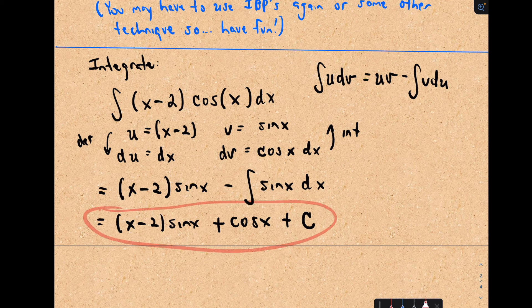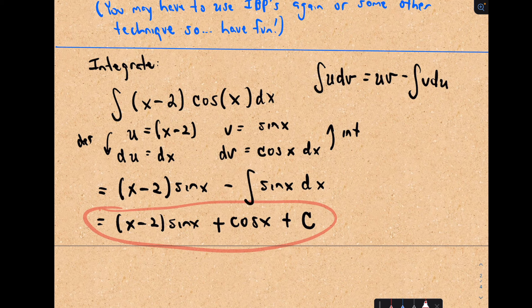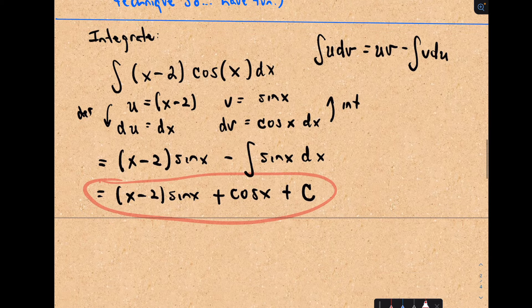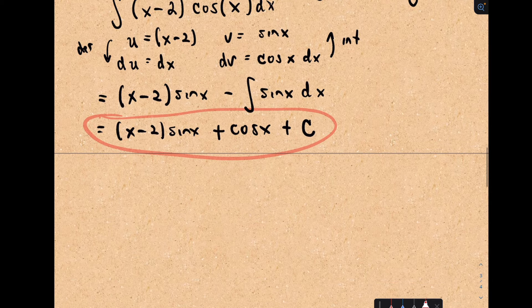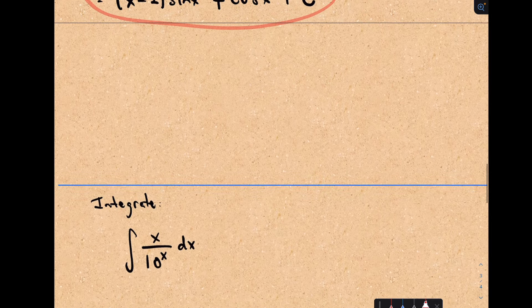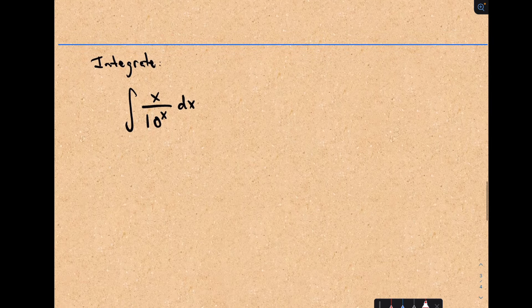It's much like u substitution as well, because sometimes you have to do a u sub. Maybe you picked u incorrectly — it's very possible that you should switch your u and your dv, and sometimes that'll work. It's not always necessarily clear, so you may have to try different things.